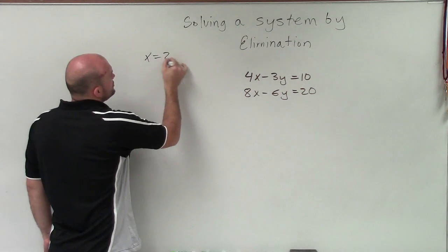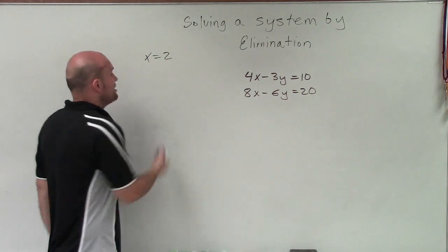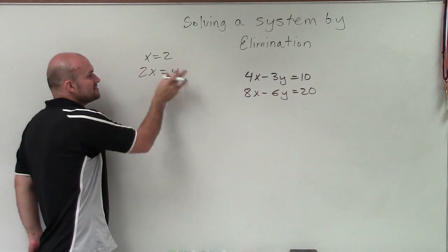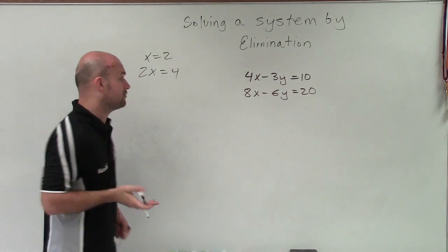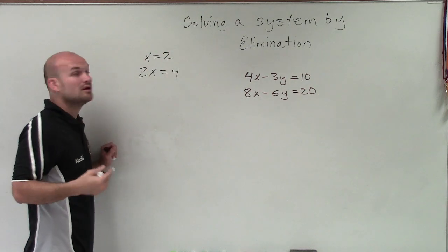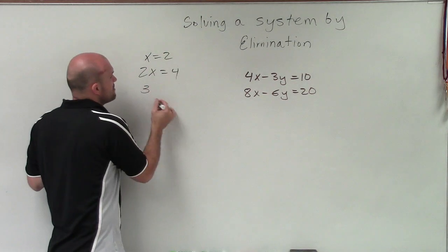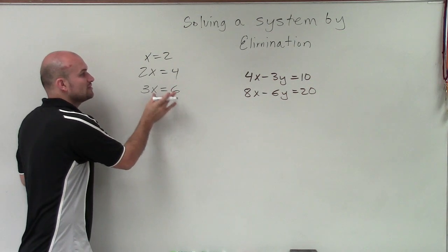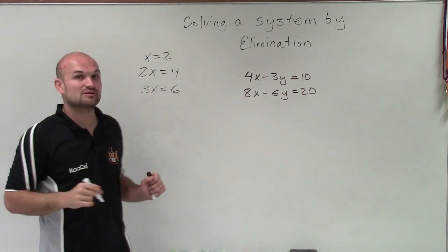If I say x equals 2, an equivalent equation to that would be 2x equals 4. Now, notice on the left and to the right, I multiplied by 2. But is 2x equal to 4 the exact same thing as x equals 2? Yes, it is. What about if I multiplied by 3? Is 3x equal to 6? 3x equals 6, is that the exact same thing as x equals 2? Yes.